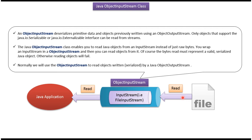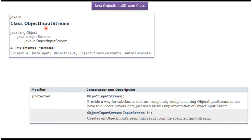Only objects that support the Serializable or Externalizable interface can be read from the streams. ObjectInputStream class belongs to the java.io package. The superclass of ObjectInputStream is InputStream, and the superclass of InputStream is Object.